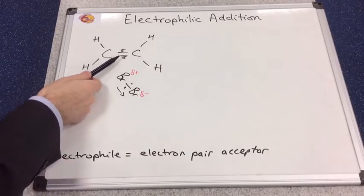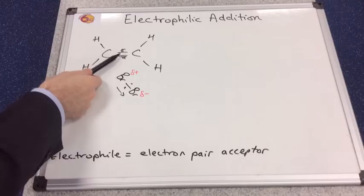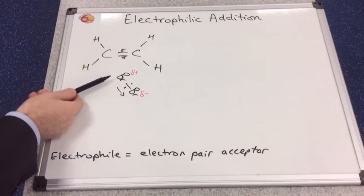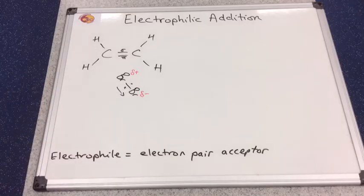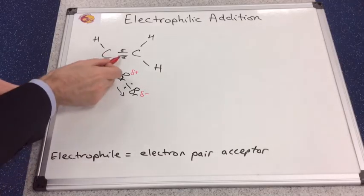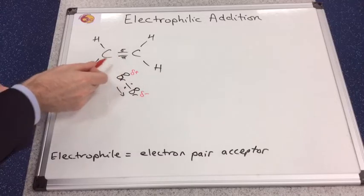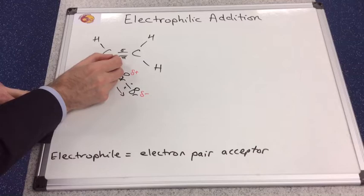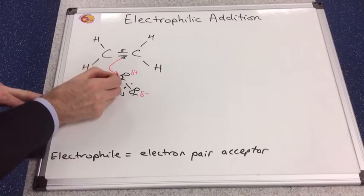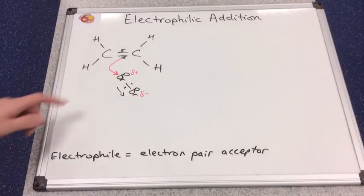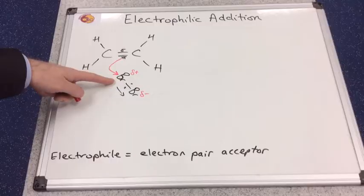Because we've got opposite charges near each other, the electrons in the double bond which are negative, and a slightly positive end to this bromine molecule, there's going to be an attraction between the negative electron pair. It's actually the pi electron pair, and the pi electron pair actually comes out and joins with this slightly positive bromine part of the molecule.